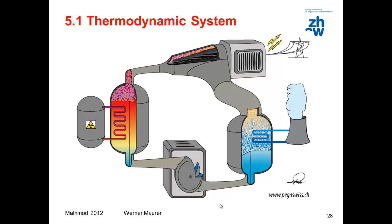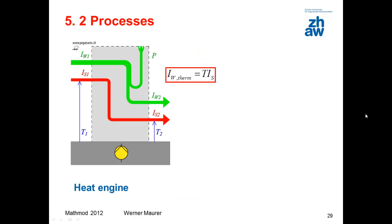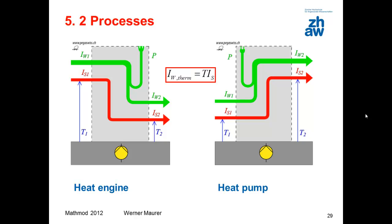Now let's move on to thermodynamics. In a nuclear reactor, entropy is generated. This entropy transmits part of its energy to the turbine. The rest of the energy is released into the surroundings together with the entropy. A heat engine conducts entropy from a high temperature to a low temperature and detracts energy from the entropy current in the form of power. A heat pump conveys entropy from the cold area to the warmer area using a certain amount of power.